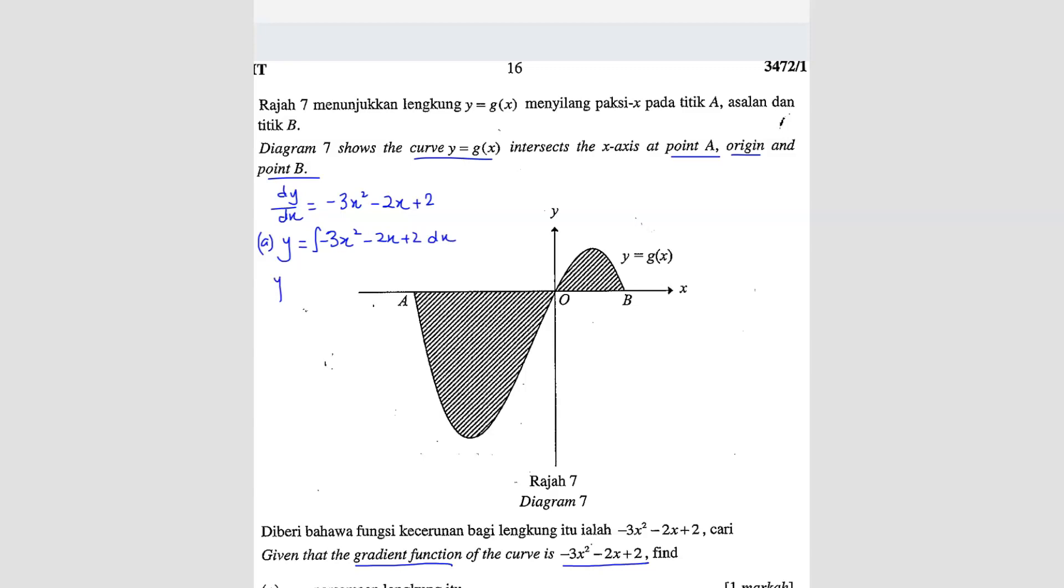So when you integrate, you will get negative 3x cube over 3 minus 2x square over 2 plus 2x plus C. We want to find C. So we have to find where this curve intersects. We can find any coordinate. So we are going to use the origin.